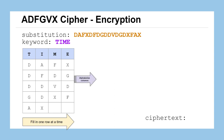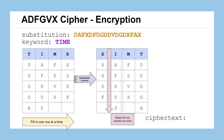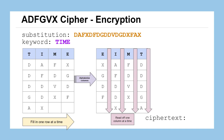Next, we're going to shuffle those columns by alphabetizing them, so column E goes up front, followed by I, then M, then T. Now we've reordered those columns. To create our ciphertext, we read off one column at a time: X-G-D-F, then A-F-D-D-X, F-D-V-X, and then D-D-D-G-A, giving us our final ciphertext message.